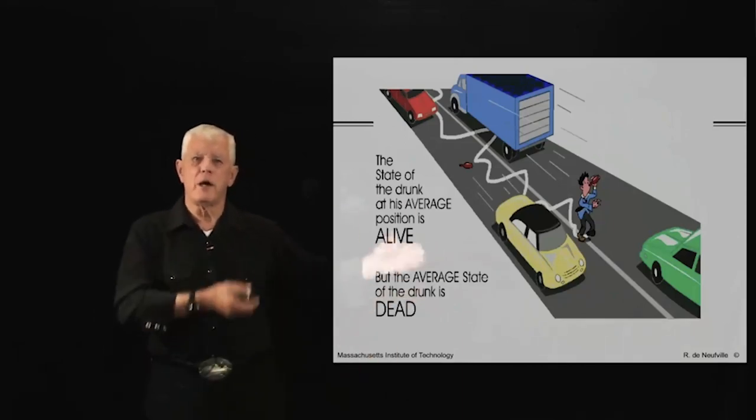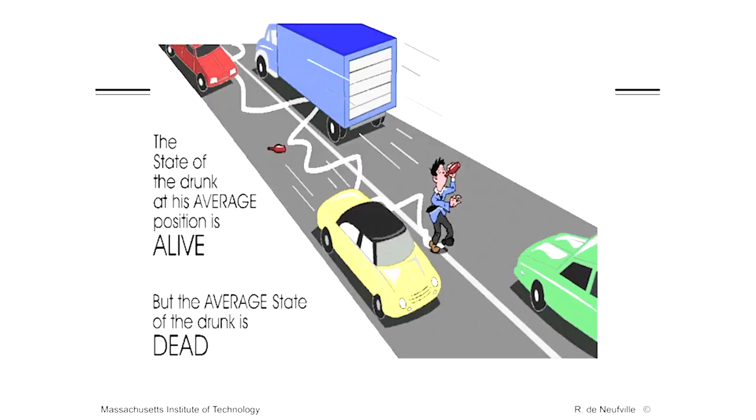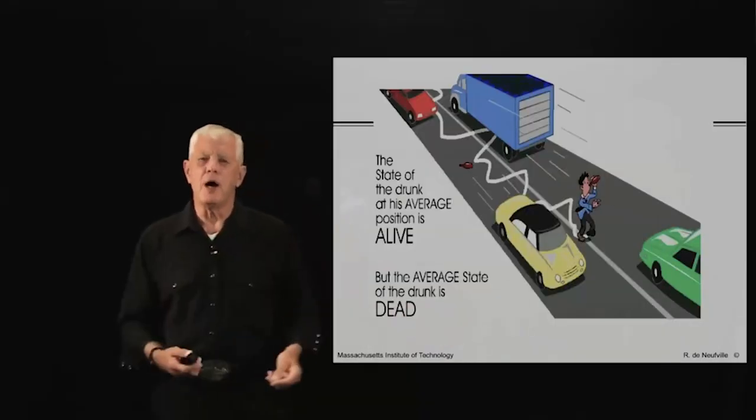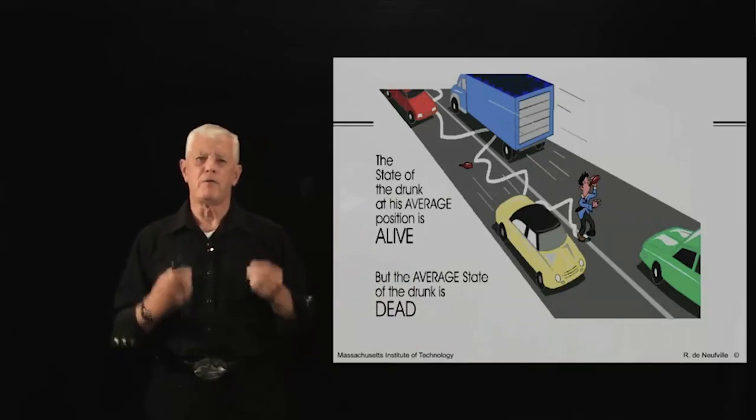I have a visual example here that may be interesting to you. Here is a story of the drunk walking down the middle of the road. On average, he's in the middle of the road. The cars pass and don't hit him. But on average, he is hit by a car, in fact, and is dead. Do not be a victim of the flaw of averages.